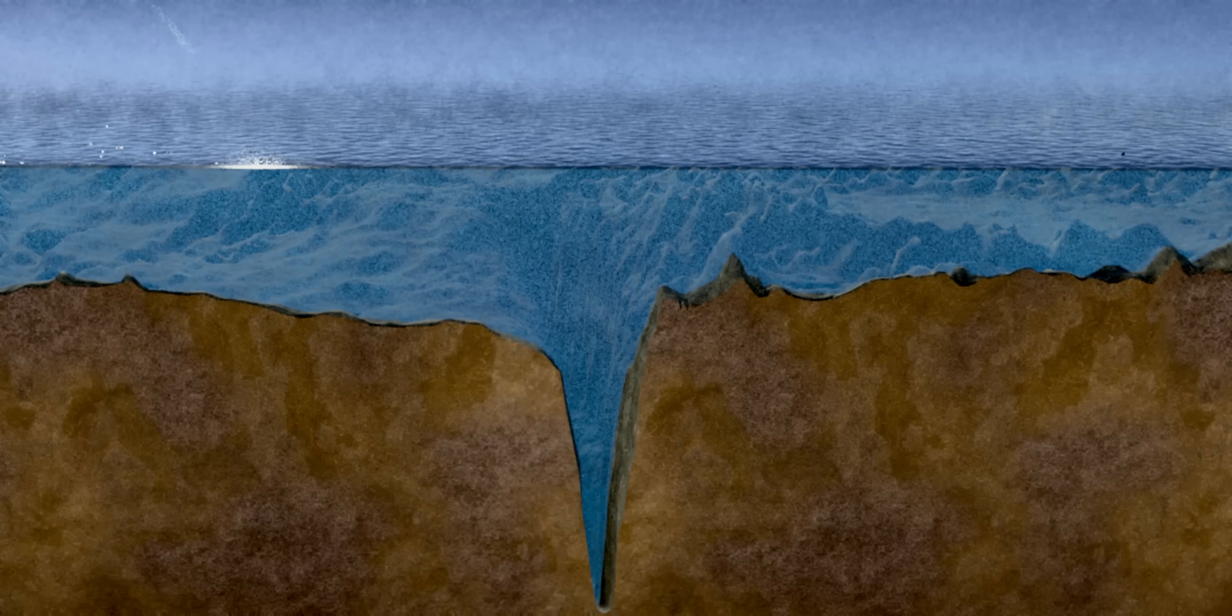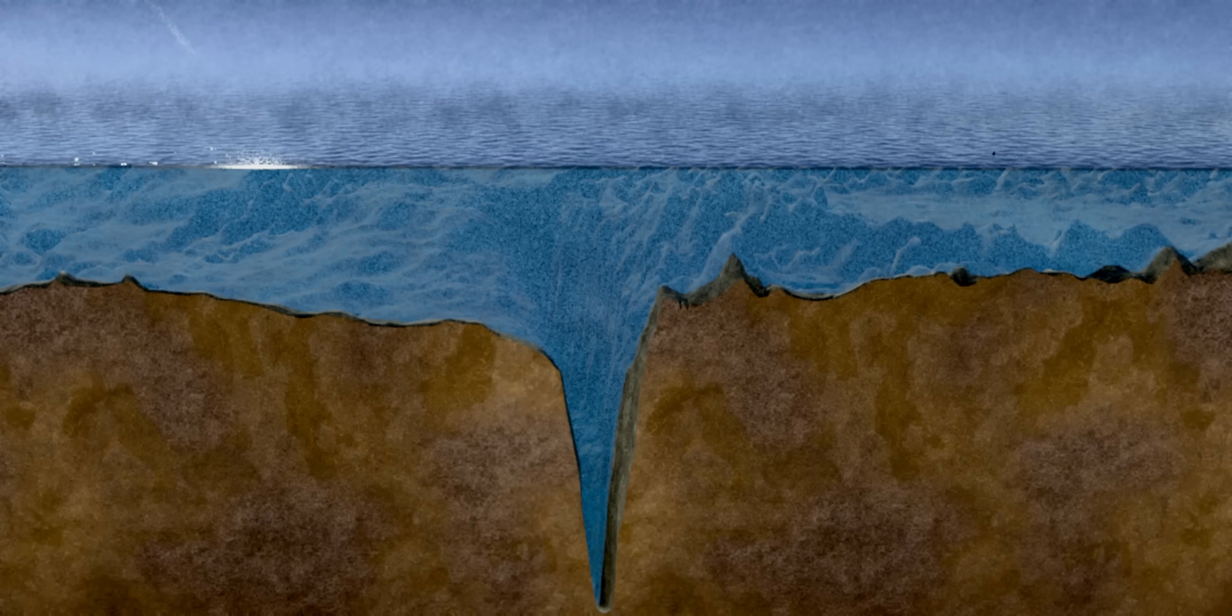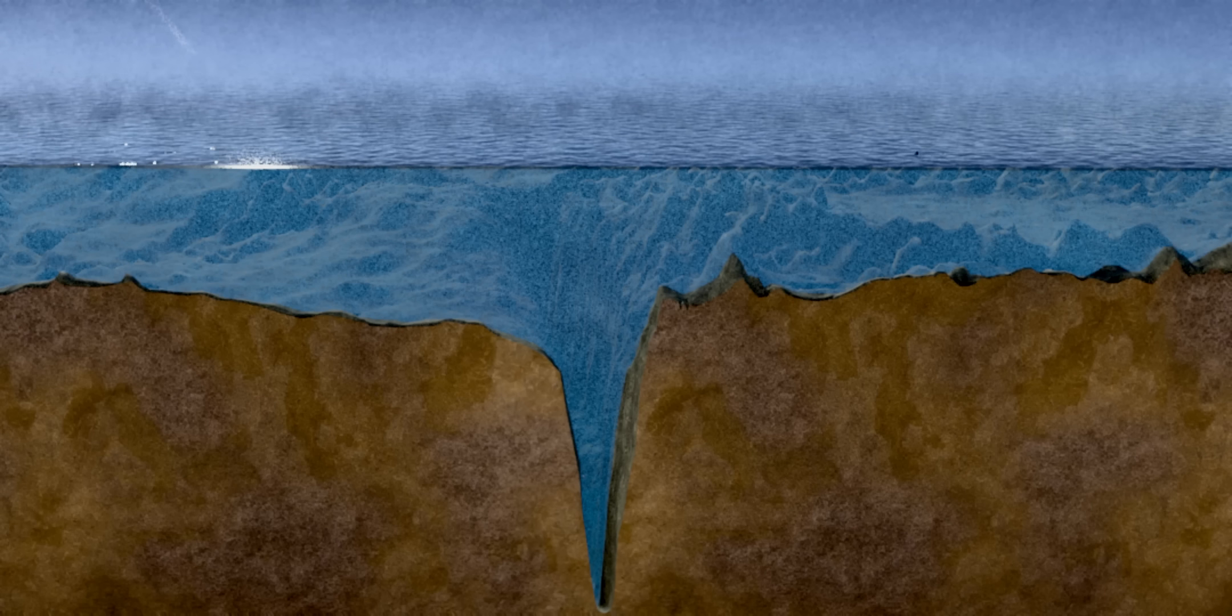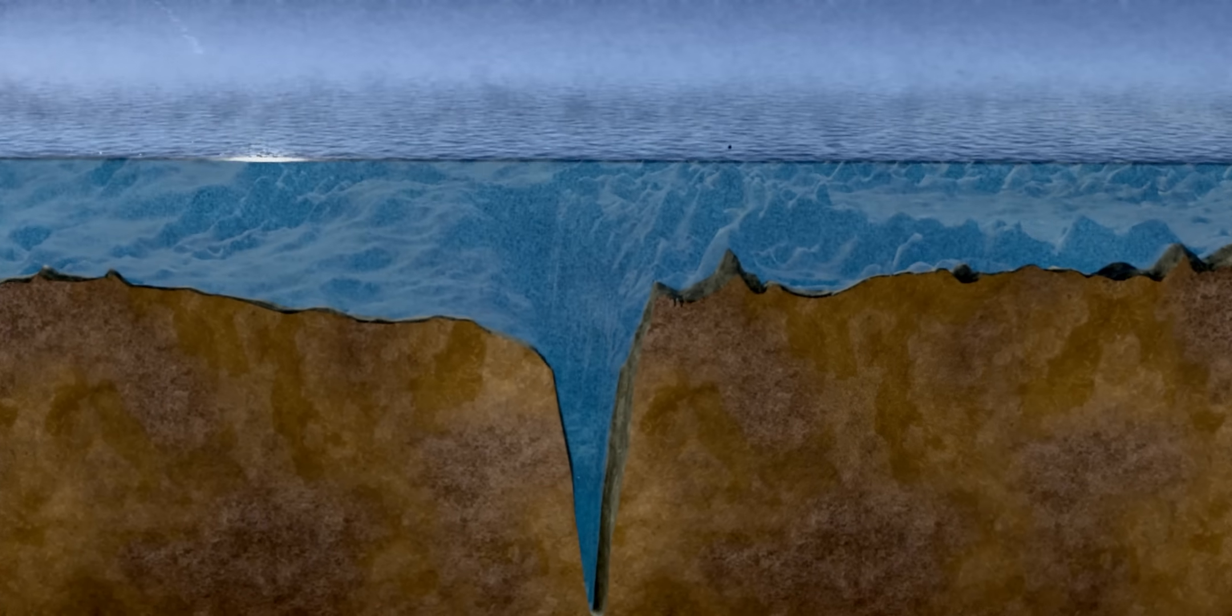At the bottom of the Mariana Trench, the pressure is over 1,086 bar, almost 1,000 times the atmospheric pressure. This is like having an elephant stand on your thumb. No sunlight penetrates this deep. Moreover, the water is consistently just above freezing, typically 1 degree Celsius to 4 degrees Celsius.